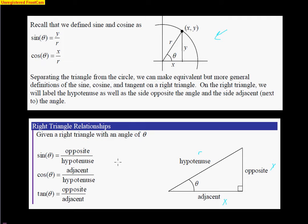The cool thing is that these same relationships apply. We know sine, from above, is y divided by r — well, for us, that's the opposite side divided by the hypotenuse. Cosine is x over r, but for our triangle here, that's the adjacent side divided by the hypotenuse. And lastly, tangent, we defined as y over x, but for us that is going to be the opposite over the adjacent. This is how we understand right triangle trigonometry using sine, cosine, and tangent functions within a right triangle.